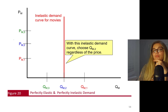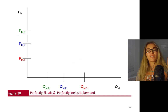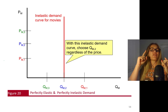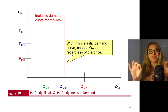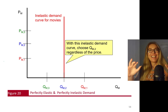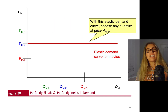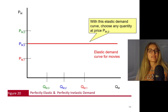With an inelastic demand curve for movies, let's say this person wants to see exactly QM2 units of movies regardless of price — $30, $20, $10 — they have to see John Wick, the latest movie. So with this inelastic demand curve, you want to consume QM. And with a perfectly elastic demand curve, you can choose any amount at price PM2 — so if the price is at this level, you're indifferent between getting M3, M2, or M1 units of movies.